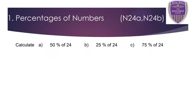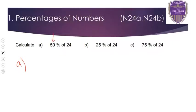So I'm going to go through each one. Percentages of numbers is the first set. Question A is 50% of 24. We should know how to do 50% — 50% is divided by 2, half of it. So literally 50% of 24 is 24 divided by 2, or half of 24. The answer is 12.